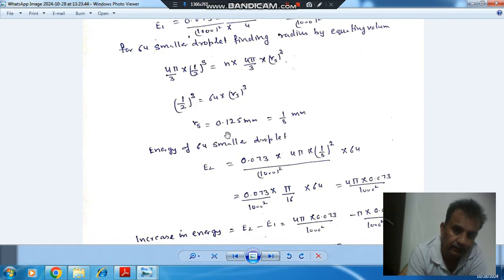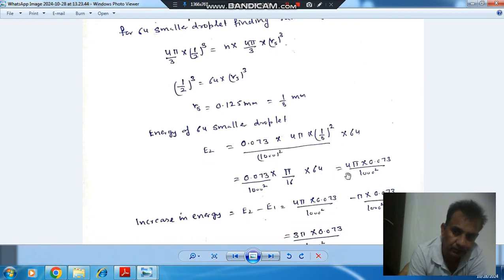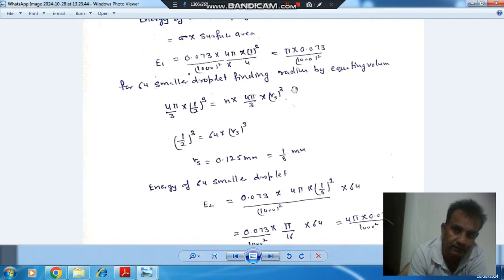Energy contained by these 64 droplets is 64 times surface tension times 4πrs², which equals 4π times 0.073 divided by 1000². The initial energy was π times 0.073 divided by 1000².